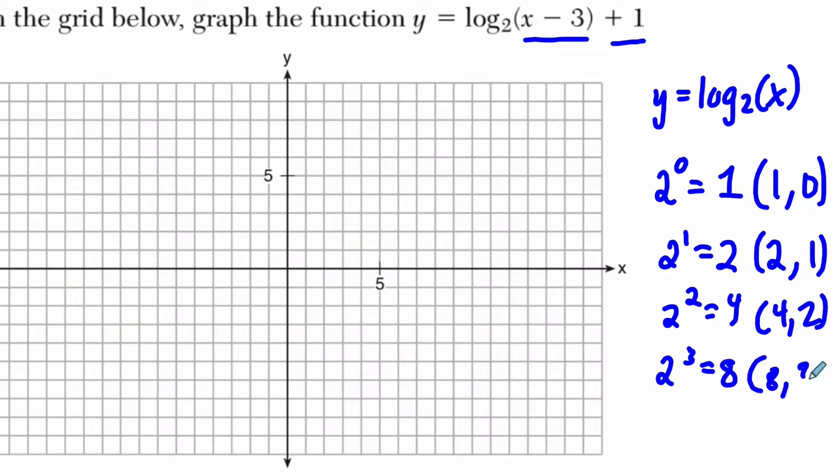So if I was graphing this right here, I would just plot these points, right? (1, 0), (2, 1), (4, 2), and (8, 3).